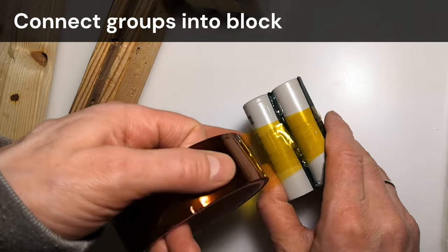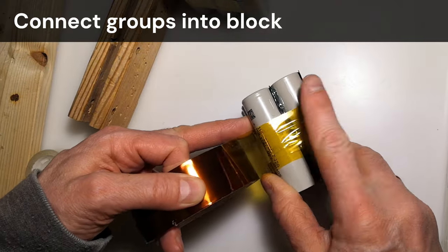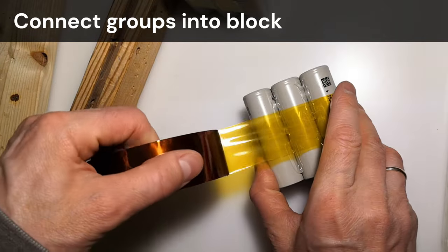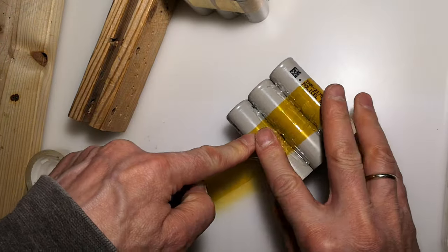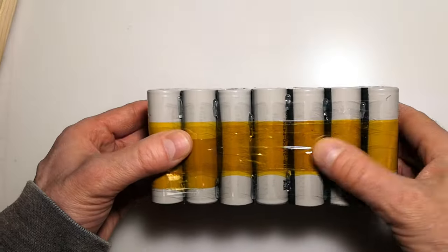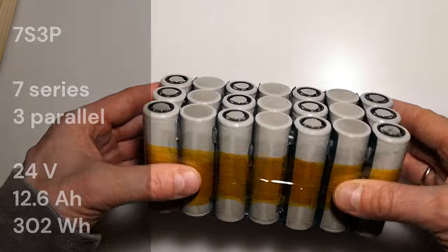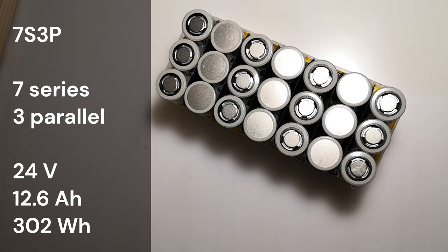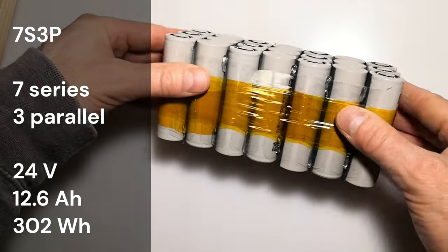I'll connect the sets with Kapton tape, which is heat-resistant and thin, minimizing the increase in the size of the battery pack. I'll use minimal adhesive between the sets so that I can easily separate them later if I need to make repairs. Now, the battery pack is ready for the next step. It's a 7S3P pack, meaning 7 cells in series and 3 in parallel.